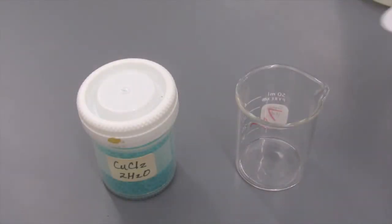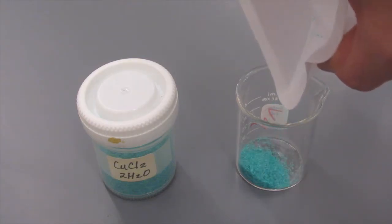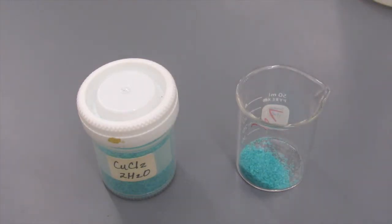When you're ready to go, the copper chloride is placed in a small beaker. To the copper chloride, we're going to add about 25 milliliters of deionized water.